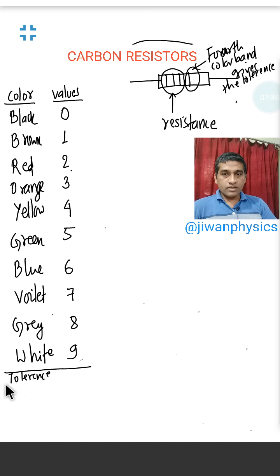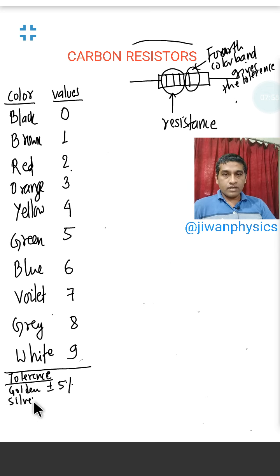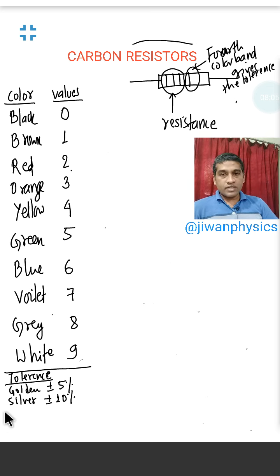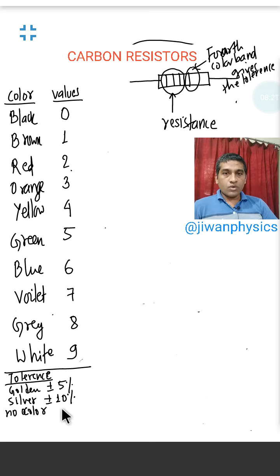For tolerance: if we have a golden band, the value is plus or minus 5%. If we have a silver color band, the value is plus or minus 10%. And if there is no fourth color band — that is, if there are only three color bands — then the tolerance is plus or minus 20%.